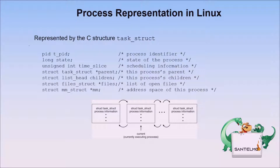In Linux, processes are represented by the C structure task_struct. This structure holds all process information for the currently executing process. We won't go deep into OS-specific details here, as we focus on operating system concepts applicable across any OS, though some features may be unique to specific systems.